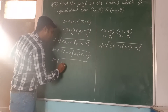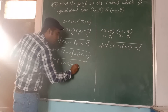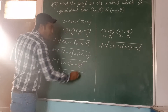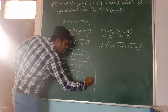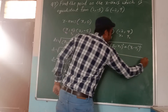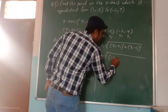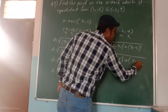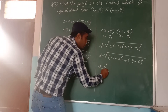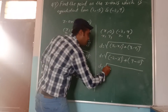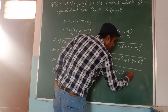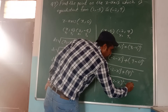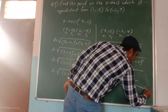Therefore D equals square root of (2 minus x) whole square plus 25. This is equation number 1. Now for the second pair: x2 is minus 2, so D equals square root of (minus 2 minus x) whole square plus (9 minus 0) whole square. Further, D equals square root of (minus 2 minus x) whole square plus 9 squared, which is 81. This is equation number 2.